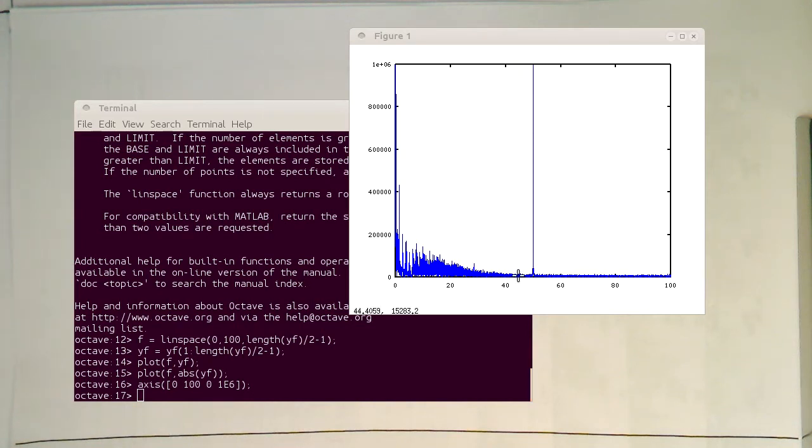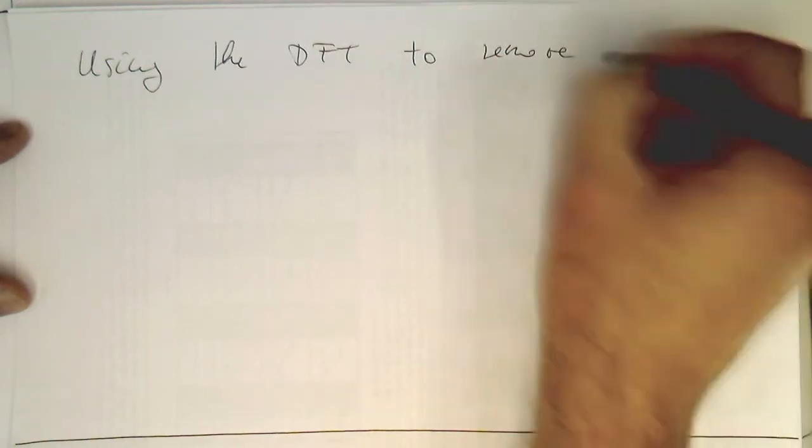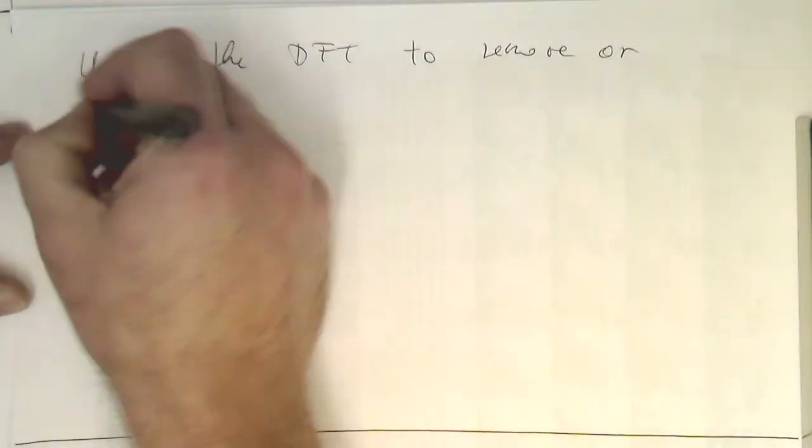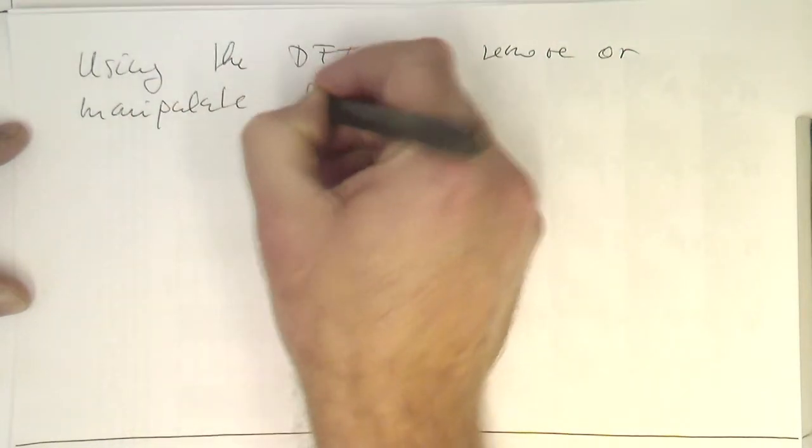So now we've got this plot here and we see that we've got loads of 50 Hertz in there. So how can we use a Fourier transform now to remove these 50 Hertz? We're using the DFT to remove or manipulate frequencies.